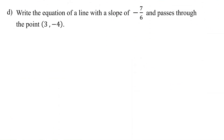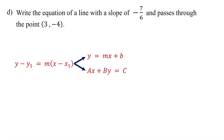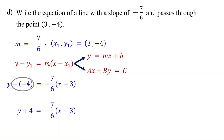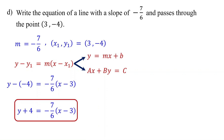Now it's your turn. Write the equation of the line in point-slope form, slope-intercept form, and standard form. First, write it in point-slope form, then convert. The slope is negative 7 sixths and the point is (3, negative 4). Replace y1 with negative 4, m with negative 7 sixths, and x1 with 3. Subtracting a negative is the same as adding the positive. This is the equation in point-slope form.